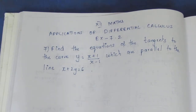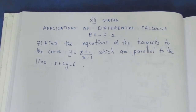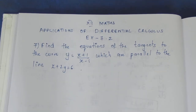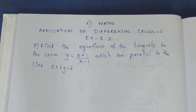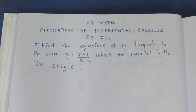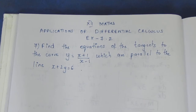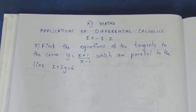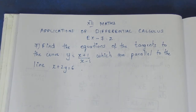Hello viewers, I am Aitli. In the 12th standard Applications of Integral Calculus, exercise 7.2, 7th sum. Find the equation of the tangents to the curve y equal to x plus 1 by x minus 1, which are parallel to the line x plus 2y equal to 6.